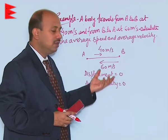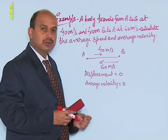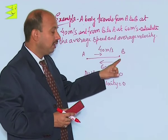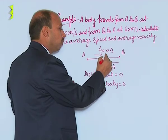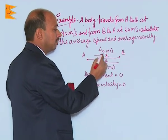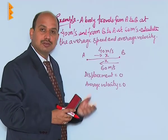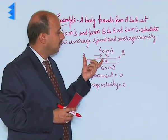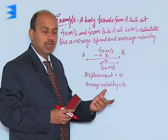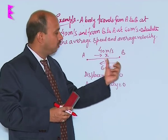Now, what about the distance? The body is going from A to B, travelling distance suppose X, then coming back from B to A, again travelling the same distance X. So now you have to calculate the average speed. For average speed, first you have to calculate the total time taken — how much time the body takes to go from A to B and then from B to A.